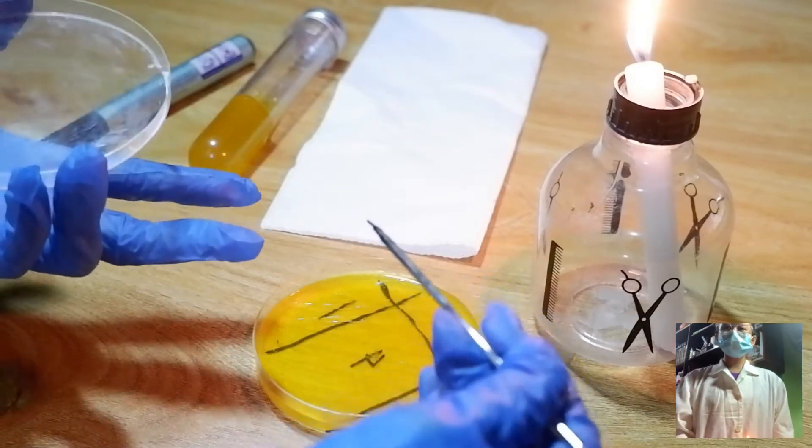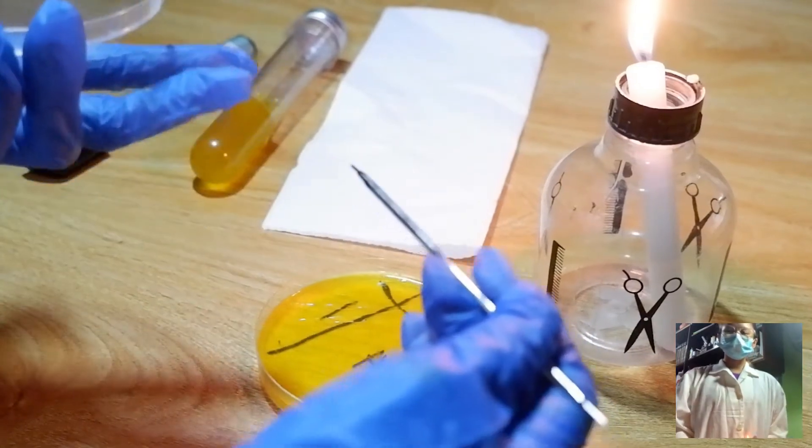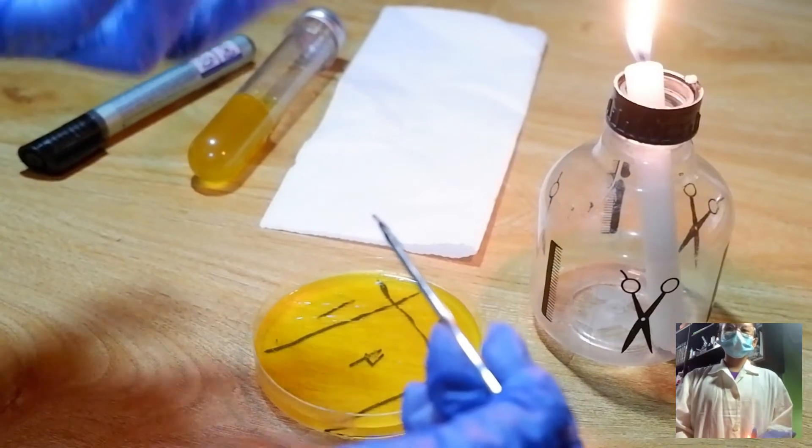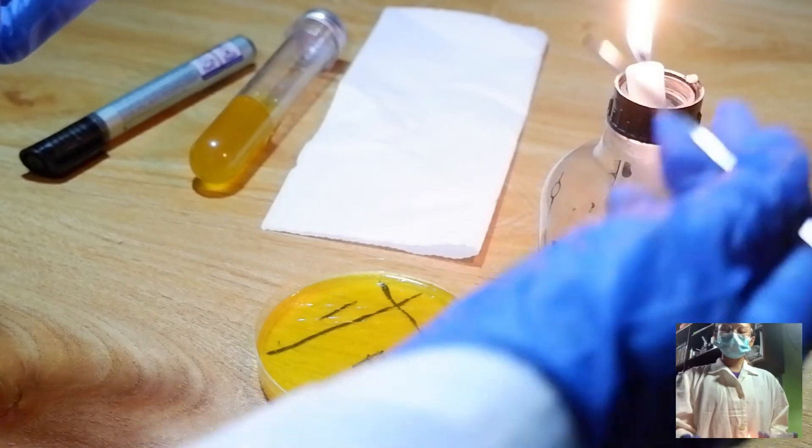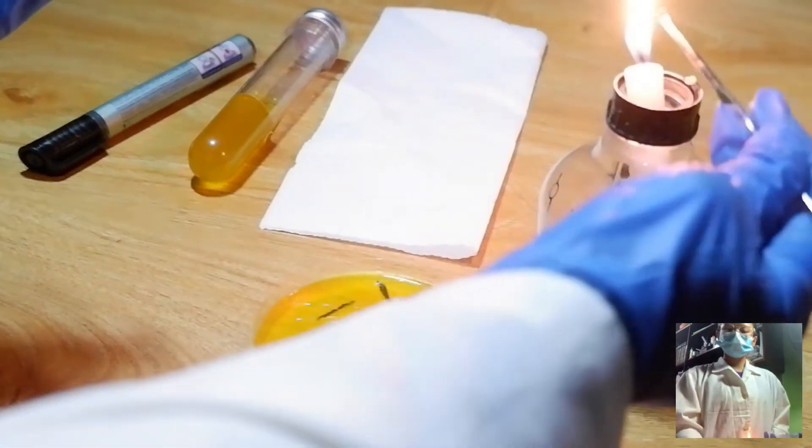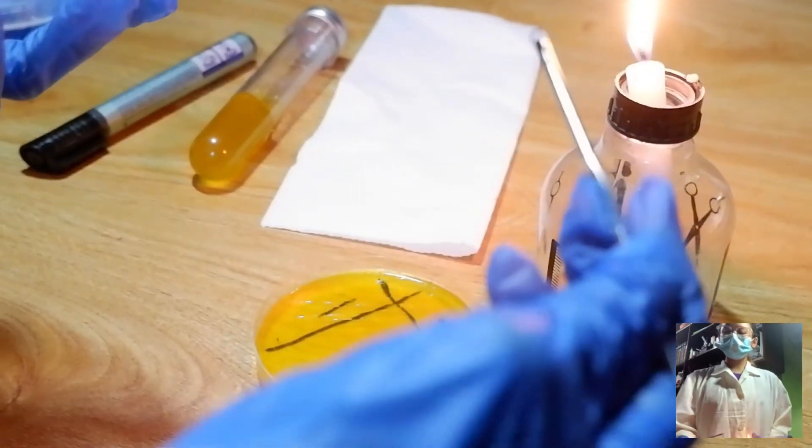We have to avoid digging into it, so just apply it lightly to our agar medium. Then, we will have to sterilize the loop again and let it cool down for 5 to 10 seconds.